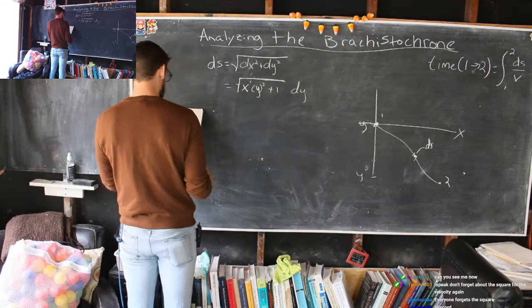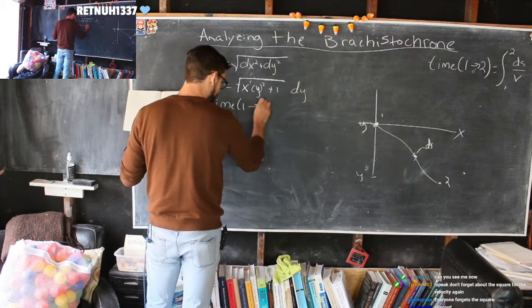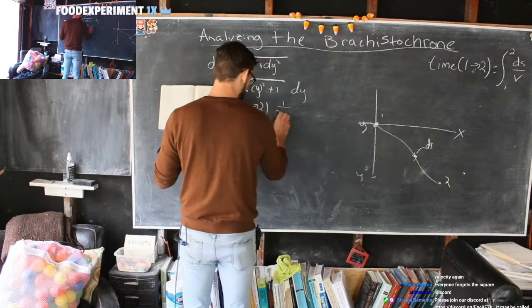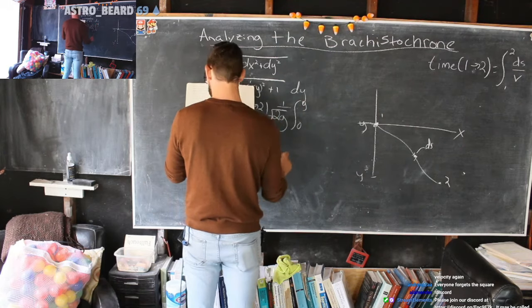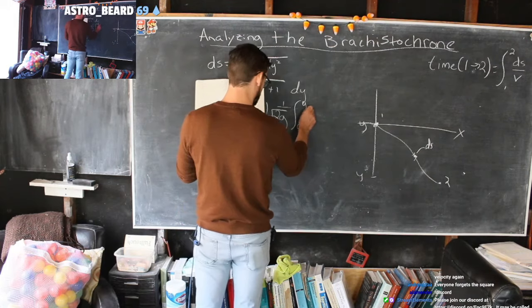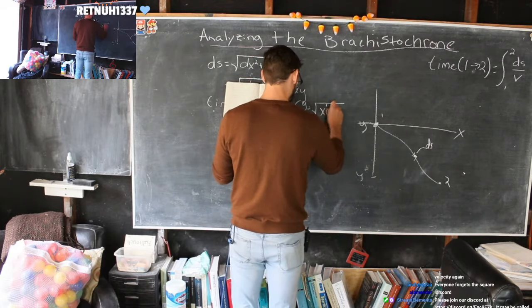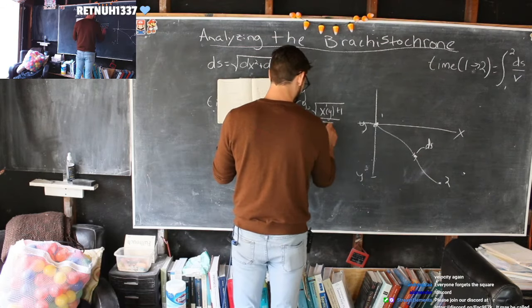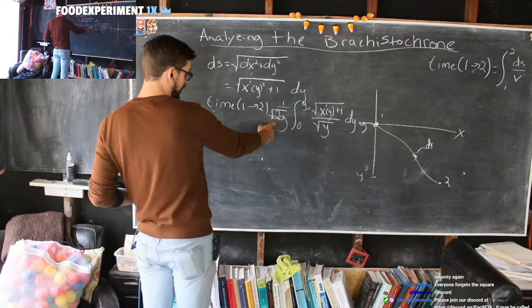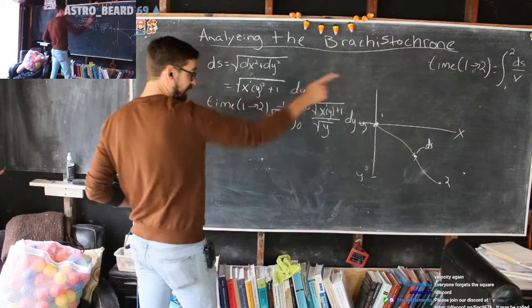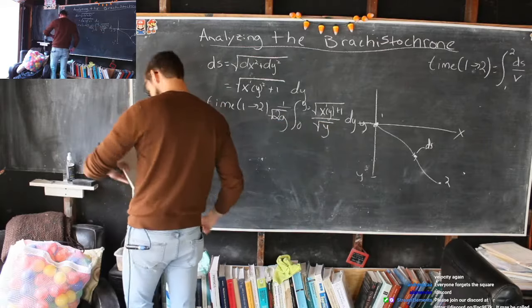So, from here, we can plug this into our integral over there and we'll have the time from one to two is given by the square root of one over two G, from zero to Y two. And then the square root of X prime of Y squared plus one over the square root of Y DY. Now this one, the square root of two G Y I pulled from our velocity. So notice here we have our DS over for the velocity and this square root of two G Y is the velocity.